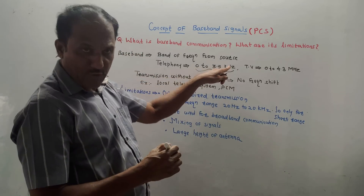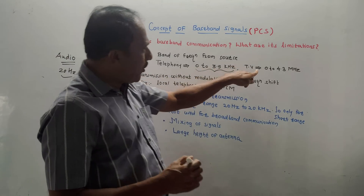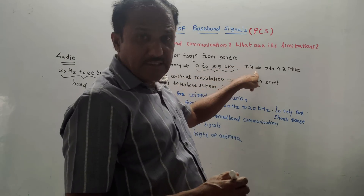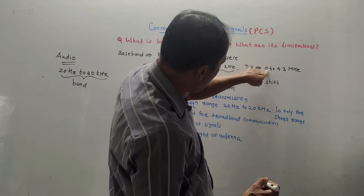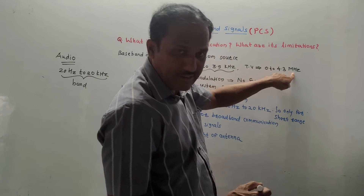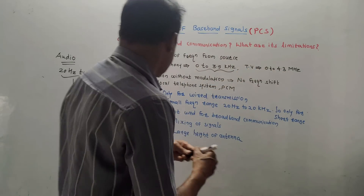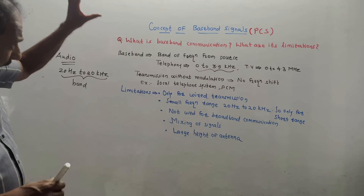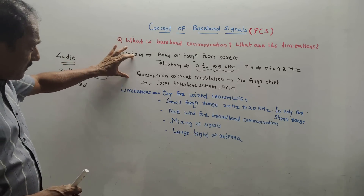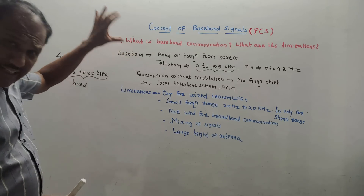For example, for basic telephony systems the baseband range is 0 to 3.5 kHz, and for TV video signals the range is 0 to 4.3 MHz.